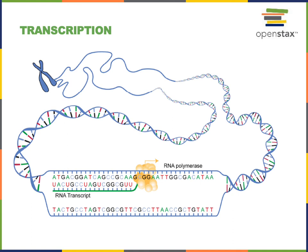The enzyme RNA polymerase will also bind at the promoter region. Directed by the transcription factors, RNA polymerase will then start to produce the RNA nucleic acid that's complementary to the DNA sequence. RNA polymerase can function without the help of helicase to break the hydrogen bonds between complementary base pairs — it is able to break the hydrogen bonds itself and also catalyze the formation of the phosphodiester bond between the RNA nucleotides.